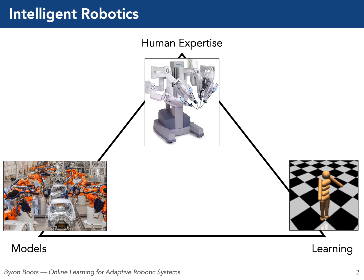I want to start by stepping back and considering how we might want to go about designing intelligent robots. I believe there are at least three completely different ways of thinking about this problem. On the left, what I've labeled as models, is basically automation — classical robotics. It includes modeling, simulation, mechanics, and controls. It relies heavily on prior knowledge of the system as well as task environment engineering. These methods are very efficient in terms of compute but brittle in the face of changing properties of the robot or the environment.